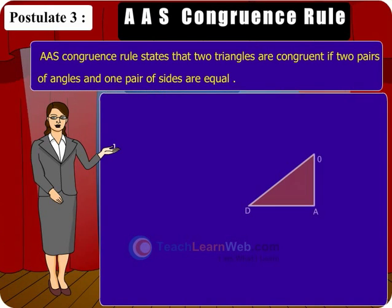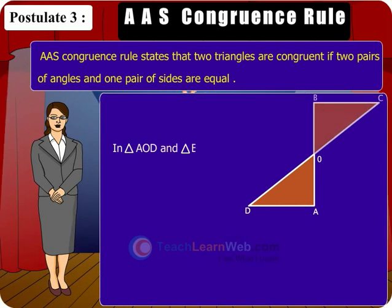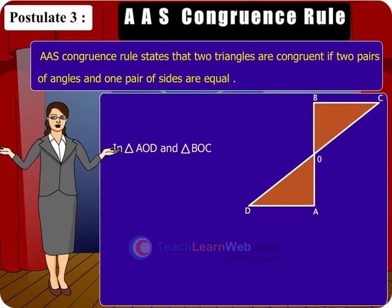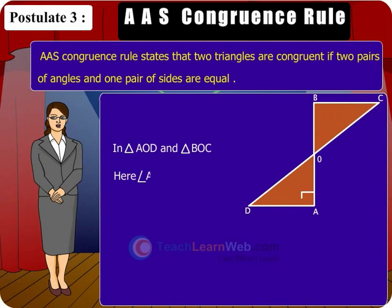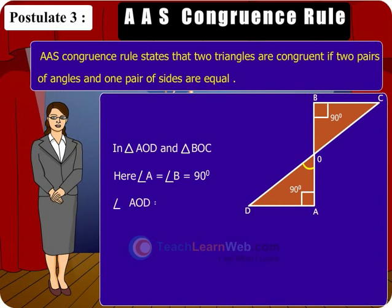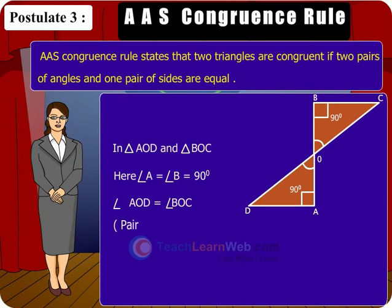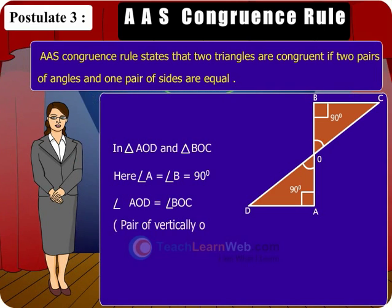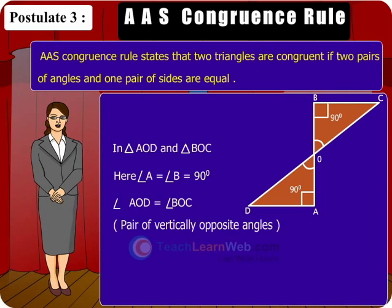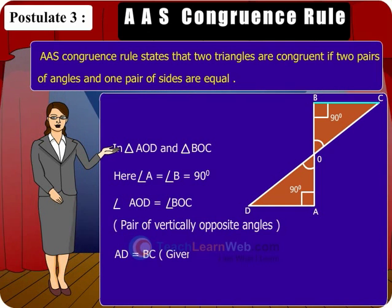consider triangle AOD and triangle BOC. Here, angle A is equal to angle B is equal to 90 degrees. Angle AOD is equal to angle BOC — a pair of vertically opposite angles. AD is equal to BC (given).